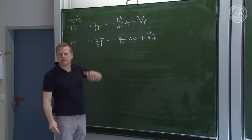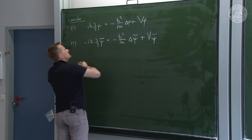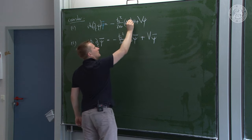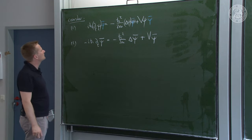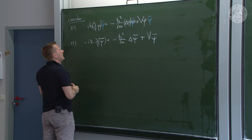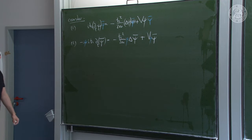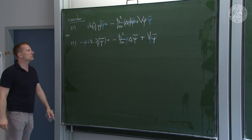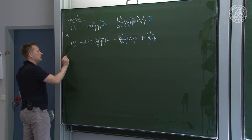On the first equation I multiply by the complex conjugate of the field ψ̄, and in the second equation I multiply from the left by ψ. Then I calculate equation 1 minus equation 2. On the left-hand side I get iℏ(∂ₜψ · ψ̄ + ψ · ∂ₜψ̄). On the right-hand side, after subtracting, the potential terms cancel — it's important that the potential doesn't play any role.